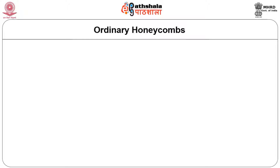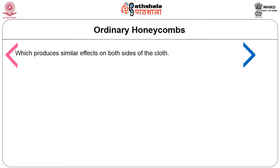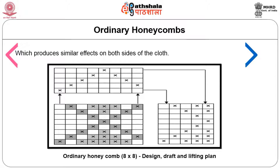There are two types of honeycomb weave. Ordinary honeycomb produces a similar effect on both sides of the cloth. An ordinary honeycomb produced on 11 ends and 8 picks is shown, with the diagonal line going from left to right and then right to left, and the warp and weft floats being equal. The number of heel shafts required is only 5, using a pointed draft, and the lifting order is very similar to the left half of the design.